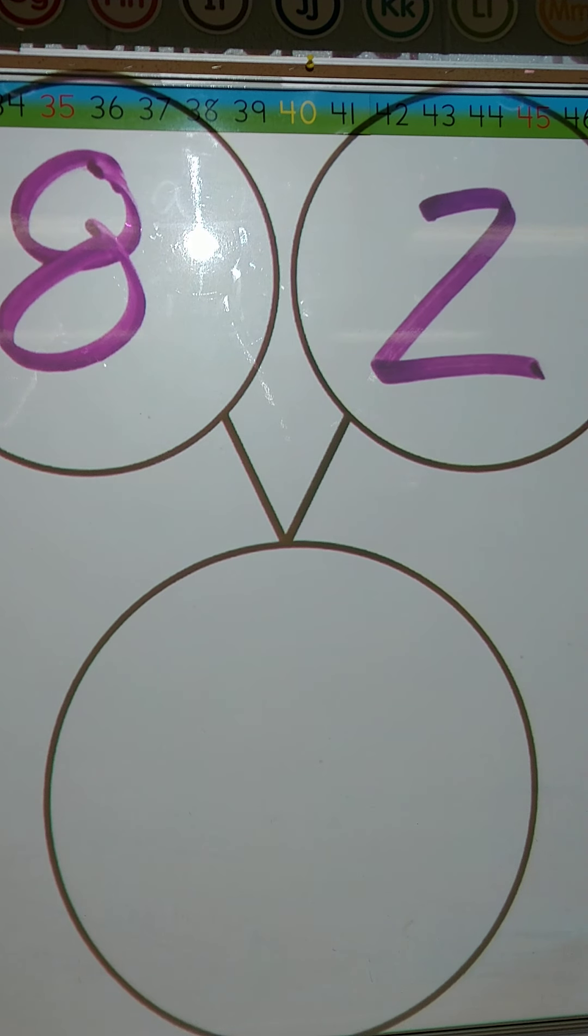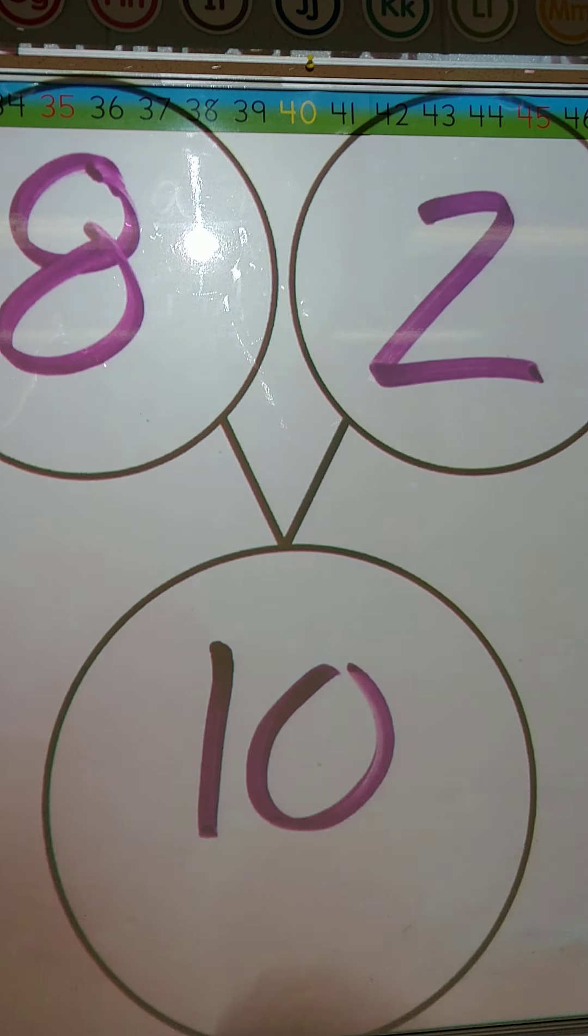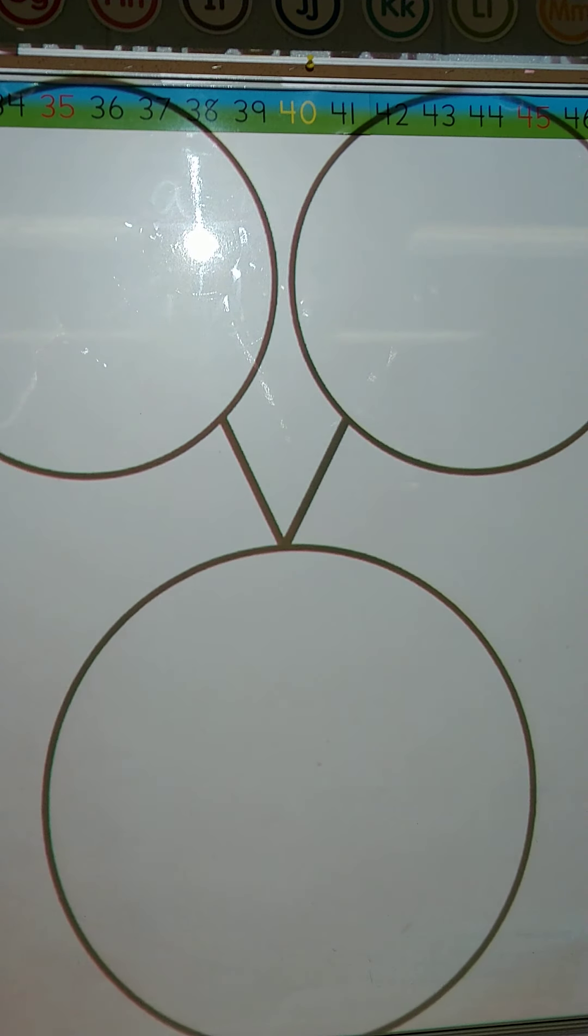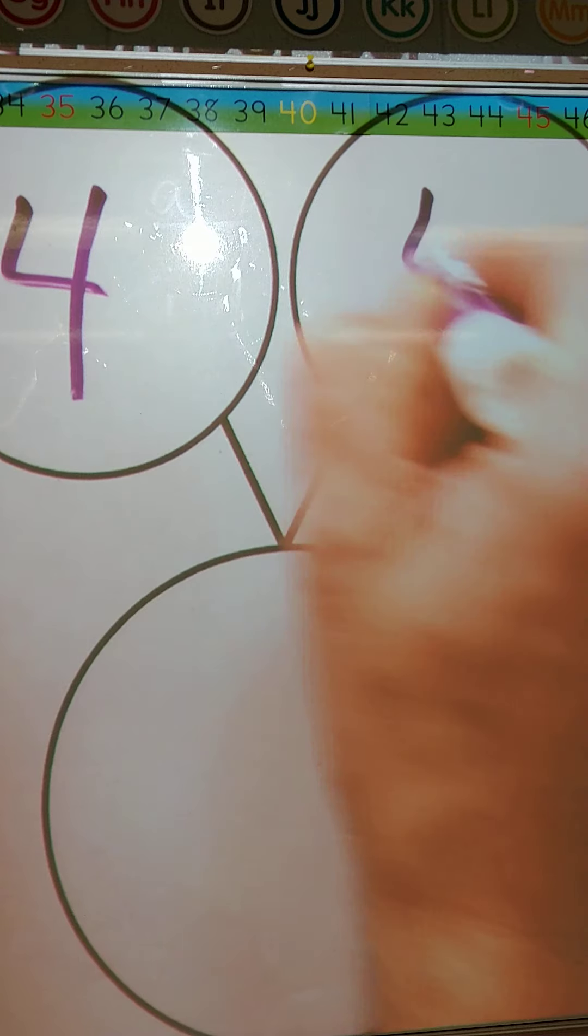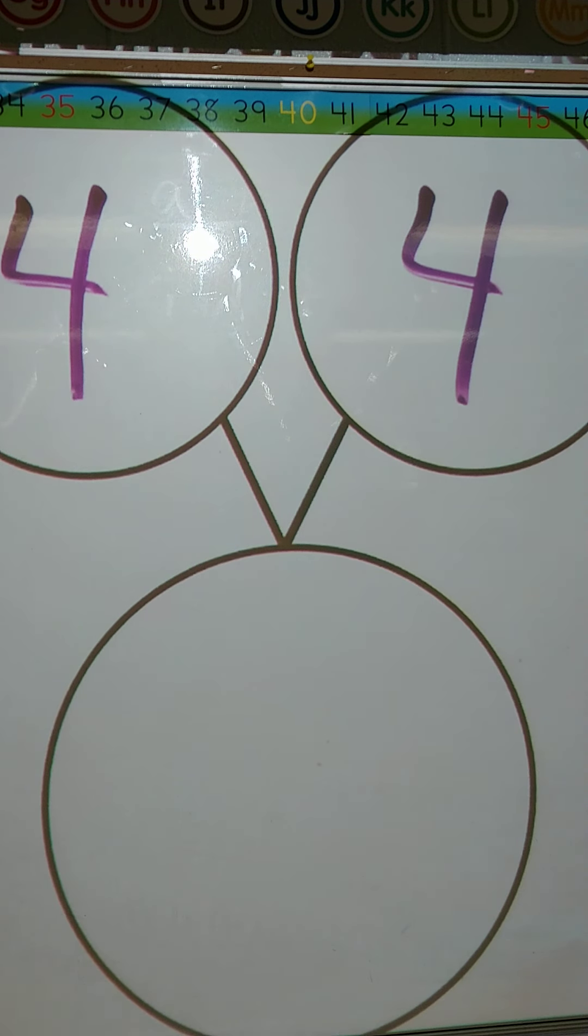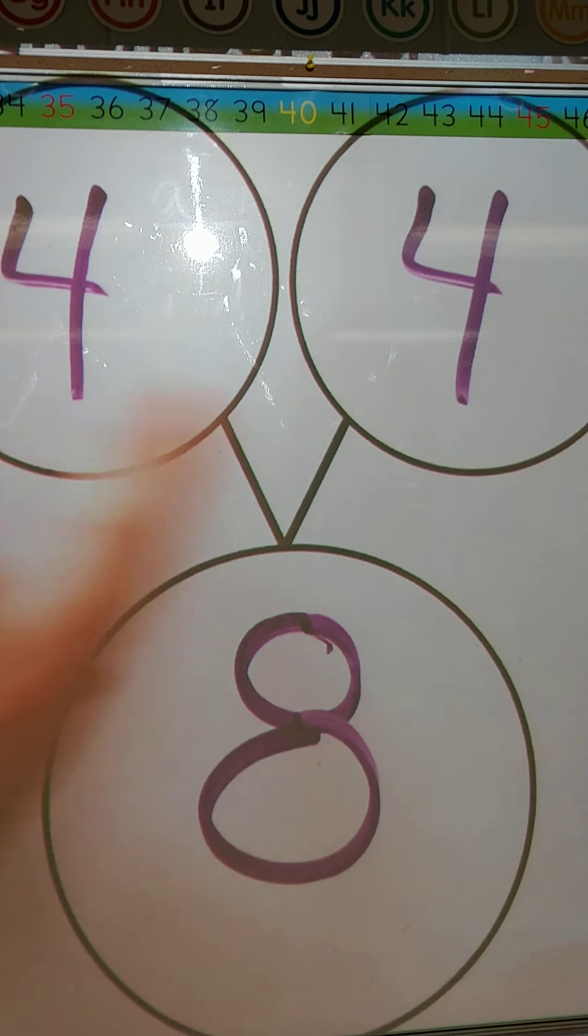So if we did 8 and 2, we know that the big number in the big circle has to be bigger than 8. So if we count on, we start at the biggest number, we count on 8, 9, 10. The big circle is equal to 10. So 10 is made up of 8 and 2. Let's go 4 and 4. 4 and 4. One part is 4. Another part is 4. We know 4 and 4 equal 8.